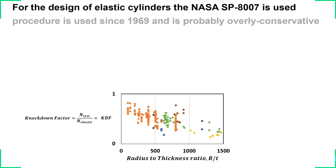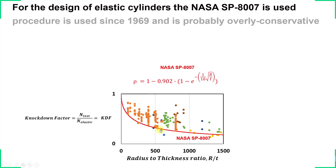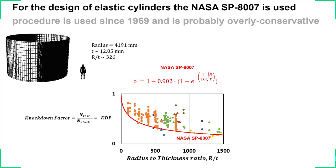How are shell structures designed in aerospace engineering today? They have used available data points and a curve fit commonly known as the NASA SP 8007. The process is: determine the radius-to-thickness ratio, use it to determine the corresponding knockdown factor from the diagram, then multiply that knockdown factor by the linear buckling load to get the design load. Because those data points are already somewhat old, this procedure leads to an overly conservative design.